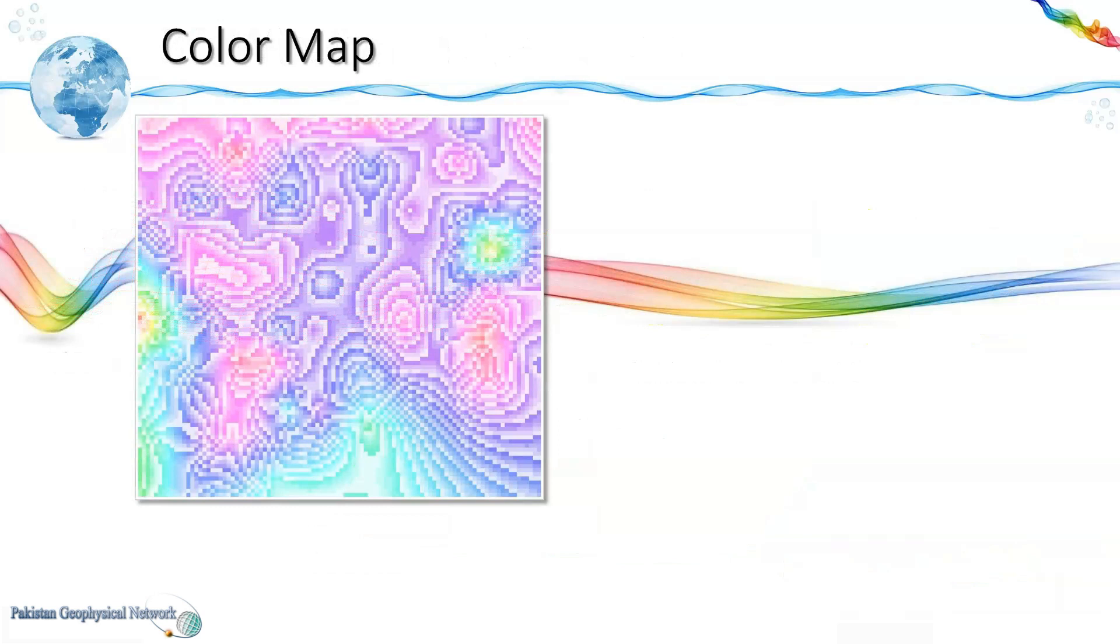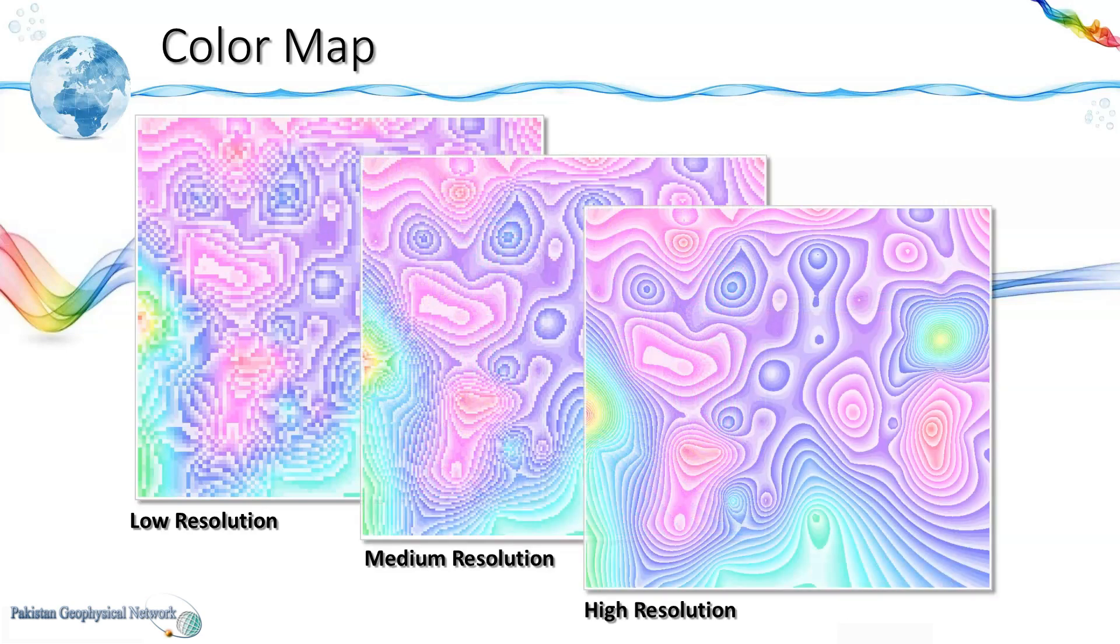Next we have the color maps. Here the z values have been converted into colors using a color spectrum. This is a low resolution color map as the grid node spacing is larger. We can generate higher resolution color maps by using grids with smaller grid node intervals.